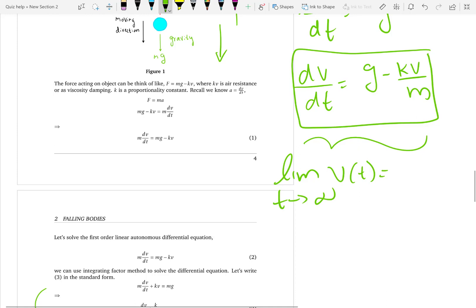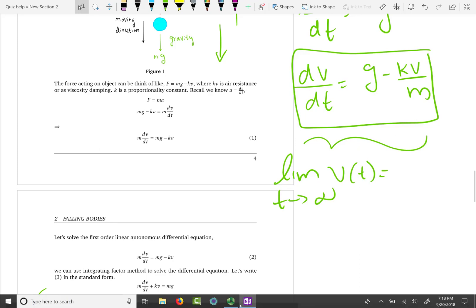It will fall at a constant velocity after a large time. So find that velocity for me using equilibrium solution, using steady state solution. Thank you very much.